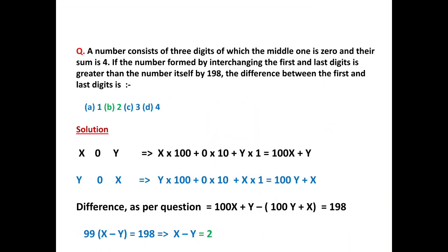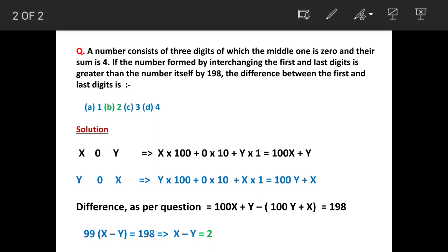Now we will see the proper way of solving this question. So suppose that the numbers are x, 0, y. So x is at 100th place. So we multiply x by 100.